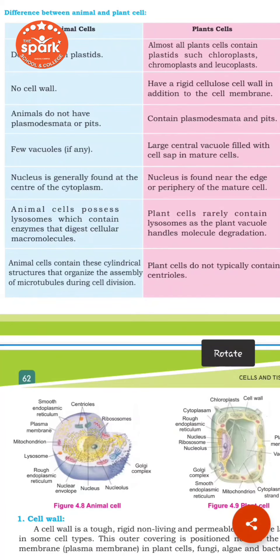Plant cells contain plastids — almost all plant cells contain plastids such as chloroplasts, chromoplasts, and leucoplasts. There are three types of plastids: chloroplasts, which are green in color and contain chlorophyll; chromoplasts; and leucoplasts, which are white in color and are present in the underground parts of the plant.